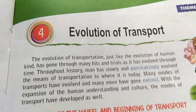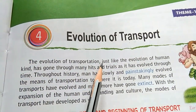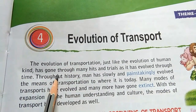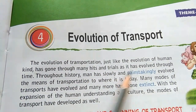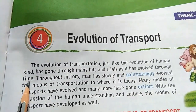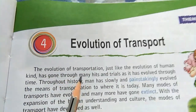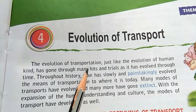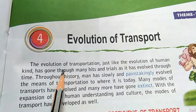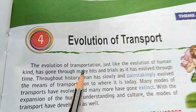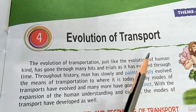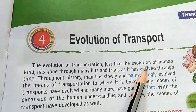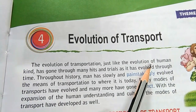The evolution of transport, just like the evolution of humankind, has gone through many hits and trials as it evolved through time. It was not a one-day process — it took many years for the wheel to be developed and for the evolution of transport. It was a slow process, just as human beings evolved. Already in the stone age we studied the evolution of human beings.